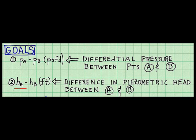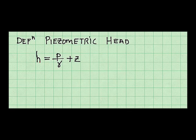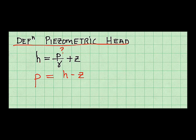So we found out how to find this goal. Let's next find out how to find this goal. Here's what I did. I started with the definition of piezometric head, because that contained my goal in it, which is pressure. Then I manipulated this equation to derive an equation for pressure. So pressure is equal to piezometric head minus elevation times specific weight.